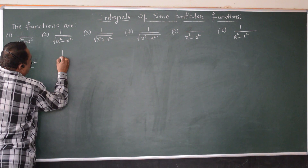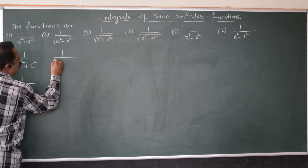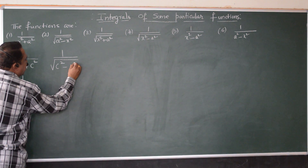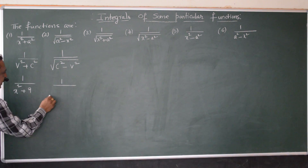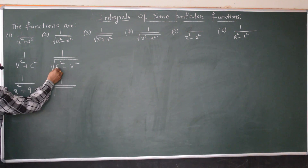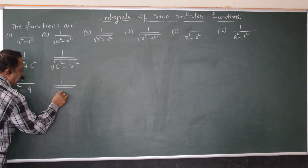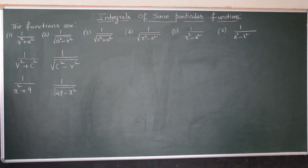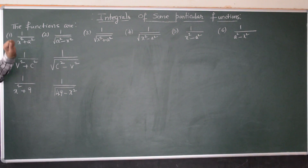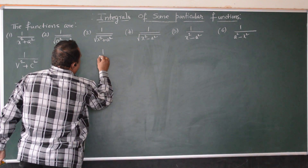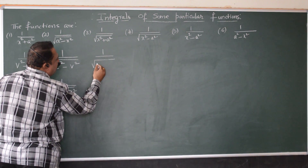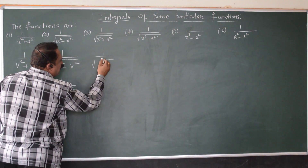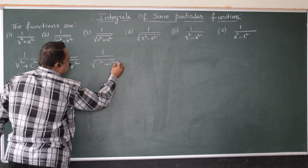The second function is 1 over the square root of a² minus x², that is, constant square minus variable square under the root. A problem can be like integrating 1 over square root of 49 minus x². The third function is 1 over square root of x² plus a², that is, 1 over square root of variable square plus constant square.